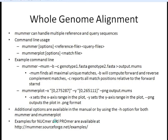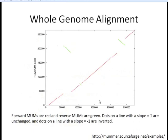There are more additional options for both programs available via the -h option or on the website. Looking at what MUMmer and mummerplot give us: forward MUMs are in red, reverse MUMs are in green. Dots on a line with a slope of 1 are unchanged regions, and ones with a slope of -1 are inversions. This allows you to see where you have synteny across the chromosome between two different genomes.